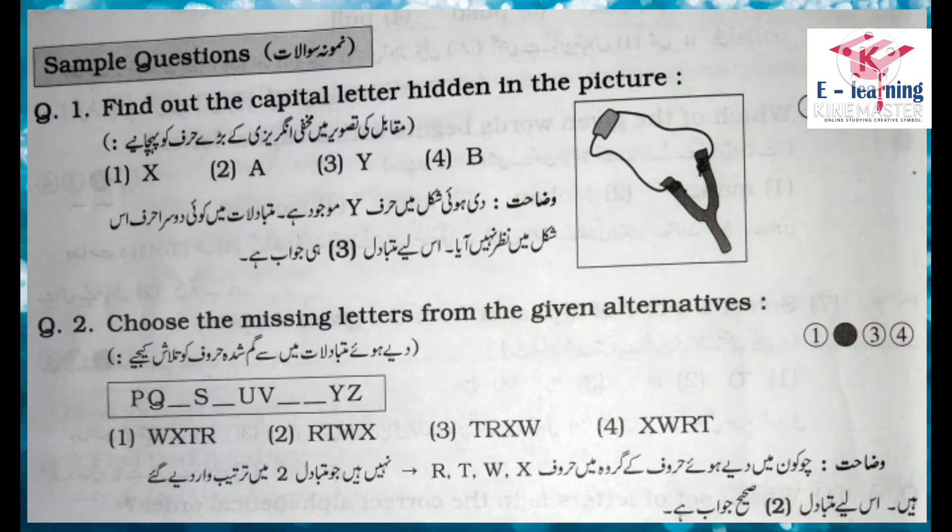Sample Question number 1: Find out the capital letter hidden in the picture. مقابل کی تصویر میں مخفی انگریزی کے بڑے حرف کو پہچانیے۔ Options: X, A, Y, B. Explanation: دی ہوئی شکل میں حرف Y موجود ہے۔ مدمقابل متبادلات میں کوئی دوسرا حرف اس شکل میں نظر نہیں آیا، اس لیے متبادل تین ہی جواب ہے۔